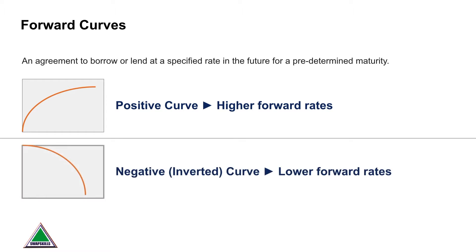When rates are forecast to fall, we say this is an inverted or negative yield curve — it's just the opposite. Inflation may be coming off, and you don't need to control spending so much.